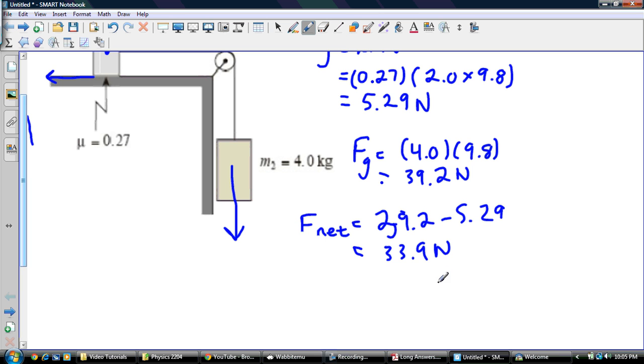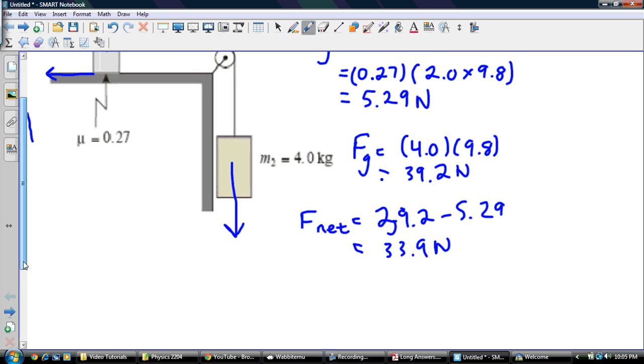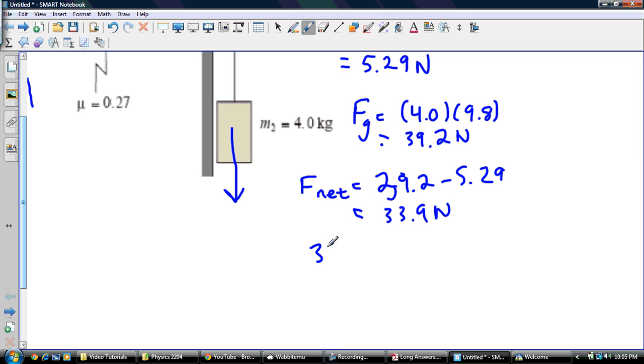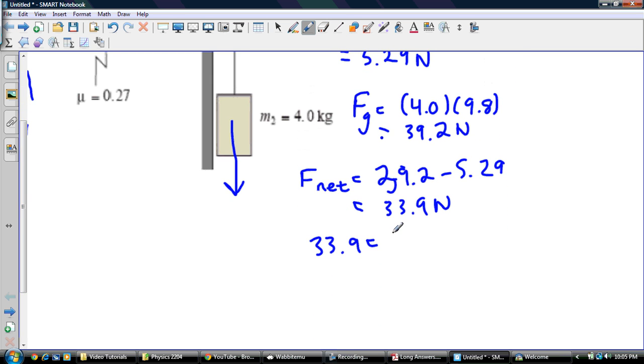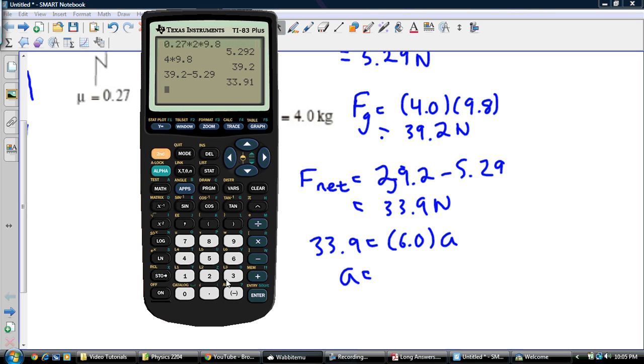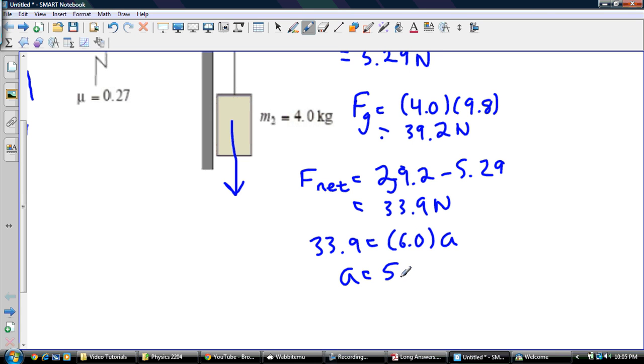Now of course we also know what Fnet is equal to. Fnet is equal to mass times acceleration. So that's what we're looking for. We're looking for acceleration. So the Fnet of the system is equal to 33.9. Now the mass of the system is 4 plus 2, so the mass of my two masses is 6.0, and my acceleration is going to be 33.9 divided by 6, and that's equal to 5.65 meters per second squared.